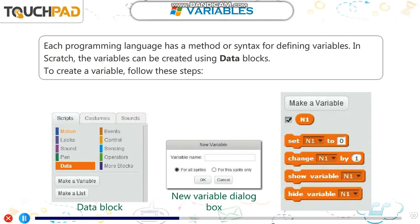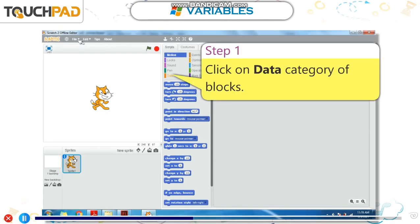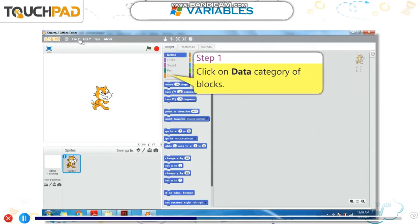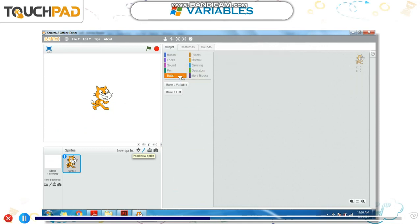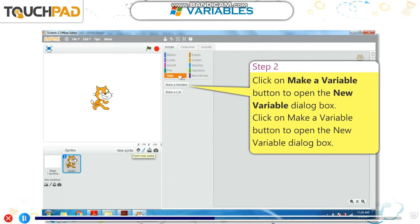To create a variable, follow these steps. Step 1: Click on the data category of blocks. Step 2: Click on the make a variable button to open the new variable dialog box.